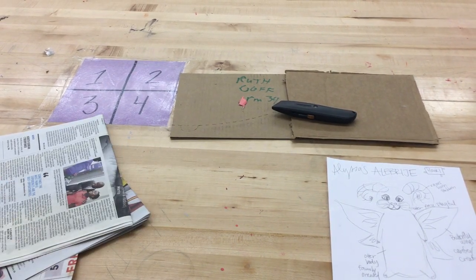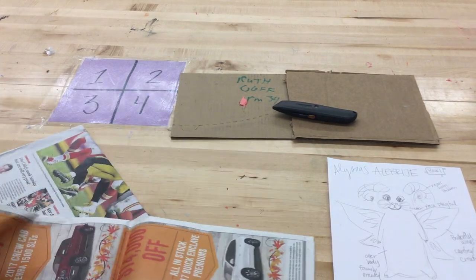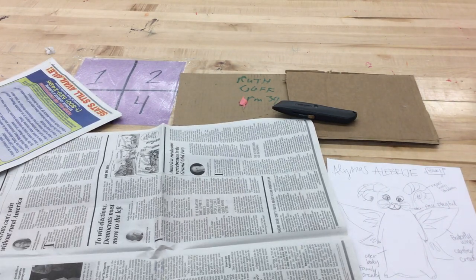Alright, so today we are going to be building the armature for our alebrihe. An armature is what lives inside of the paper mache sculpture so that you have something that you can put the paper mache on, because the paper mache is going to be heavy.